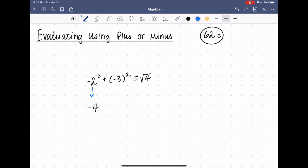My second term, I square that negative, and it would be a positive 9. But now we're getting into the last term. So I have to keep that plus or minus there. And I know that the square root of 4 is 2.